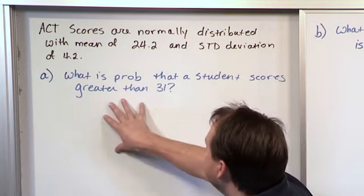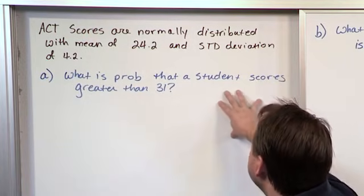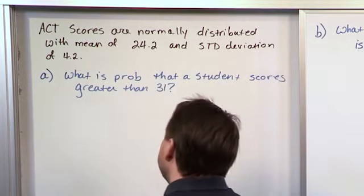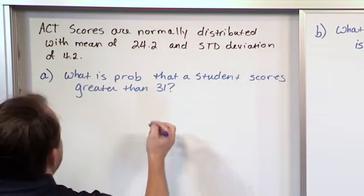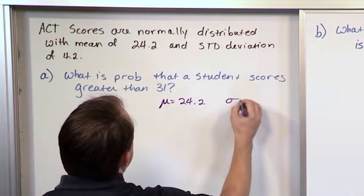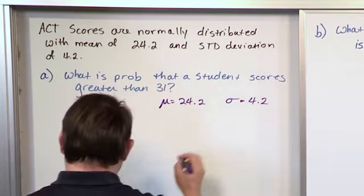The question is, what is the probability that a student, a randomly drawn student, scores greater than 31? So, as before, let's write down what we know. The mean is 24.2. The standard deviation is 4.2.